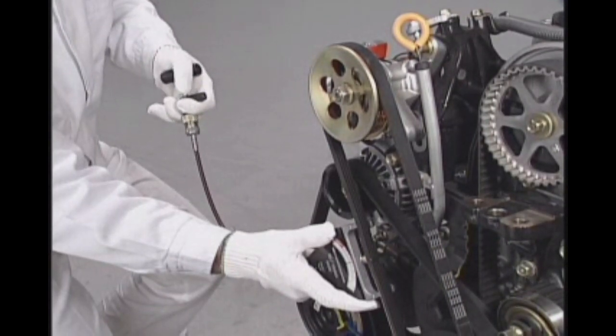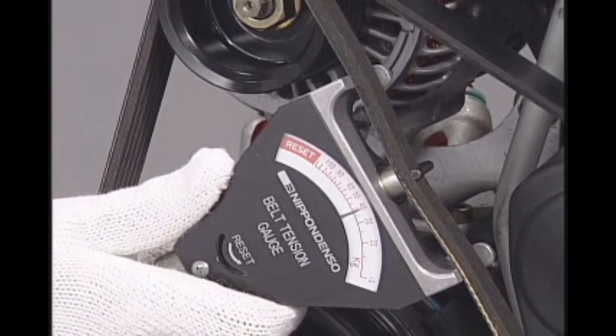When you release your grip on the handle, the belt tension will be indicated on the gauge.